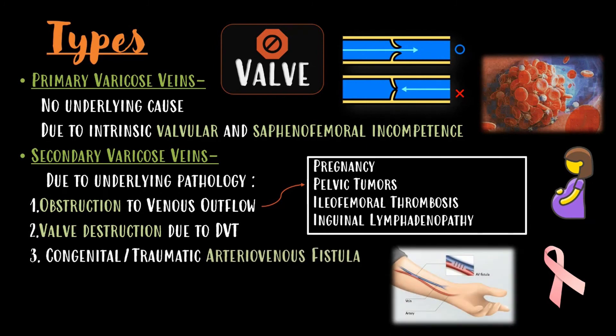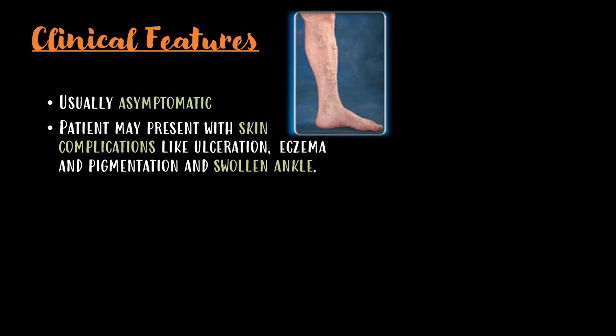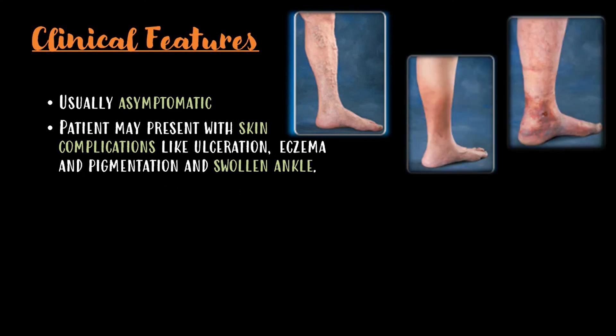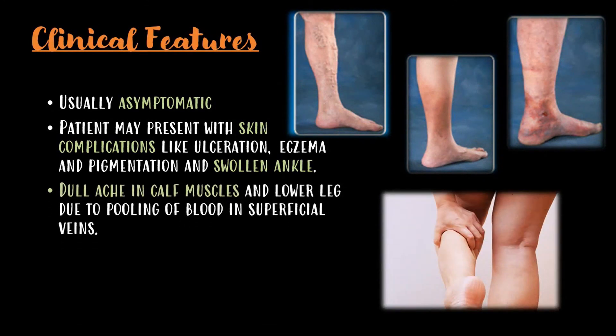Coming to the clinical features, varicose veins are usually asymptomatic. On progression of disease, the patient may present with skin complications like ulceration, eczema, pigmentation, and swollen ankle. Dull ache in the calf muscles and lower leg occurs due to pooling of blood in the superficial veins. The patient complains of worsening of symptoms by evening.